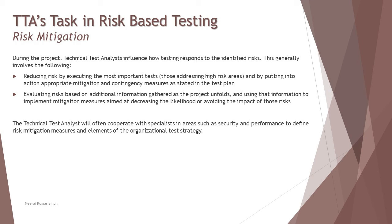During the project, a Technical Test Analyst must influence how testing responds to identified and assessed risks. This is generally done by: reducing risk through executing the most important test cases, putting into action appropriate mitigation and contingency plans, evaluating risk based on additional information gathered as the project unfolds, and using that information to implement mitigation measures aimed at decreasing the likelihood or avoiding the impact of those risks. The Technical Test Analyst will often cooperate with specialists in areas such as security and performance to define risk mitigation measures and elements of the organizational test strategy.